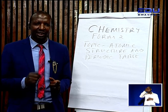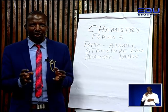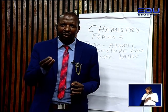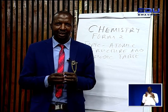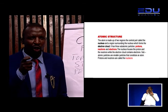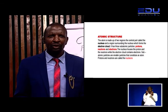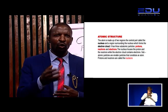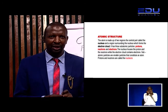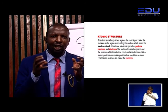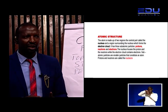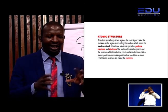Surrounding the nucleus, we have another region called the electron cloud. The electron cloud houses the third subatomic particle of an atom, which is called the electrons. Therefore, we can conclude that there are three subatomic particles in an atom: the protons, the neutrons, and the electrons.